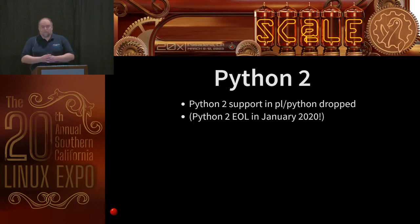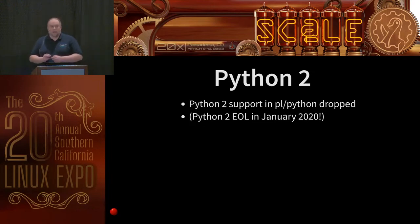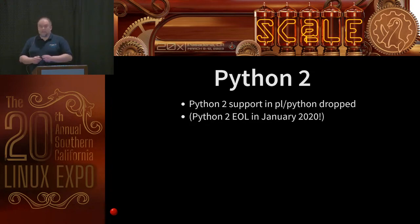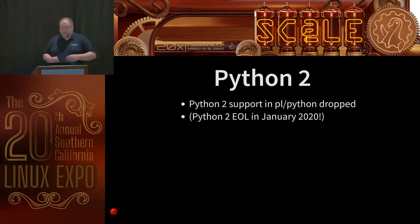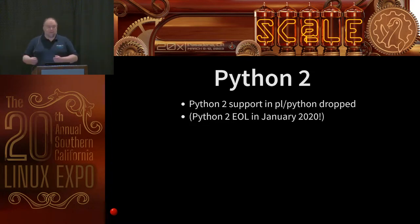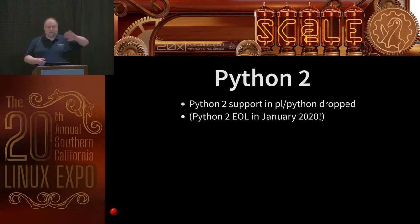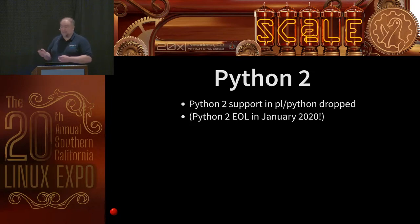We've dropped support for Python 2 in PL/Python. Most customers ran into this when Debian and Ubuntu dropped Python 2 support earlier, but the entire Python 2 language went end-of-life in January 2020. If you have stored procedures in PL/Python 2, upgrade them to PL/Python 3 in your old version of Postgres first, then remove PL/Python 2 before upgrading, because it's simply not there in Postgres 15.